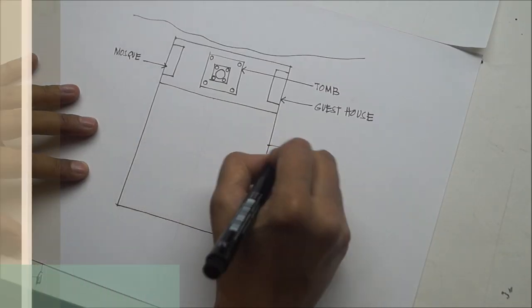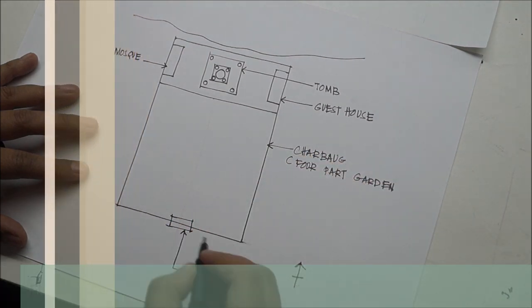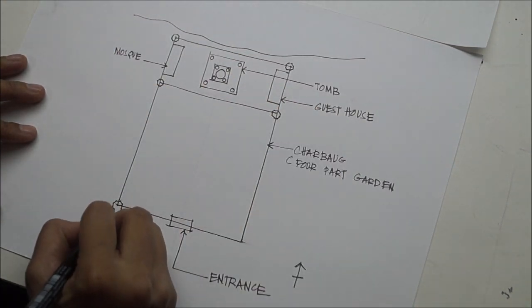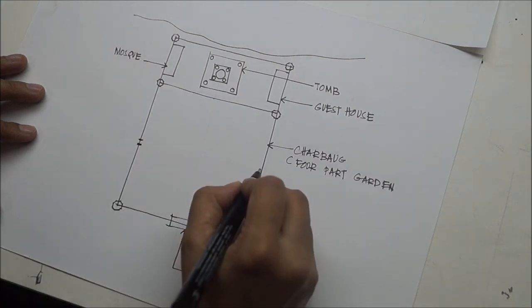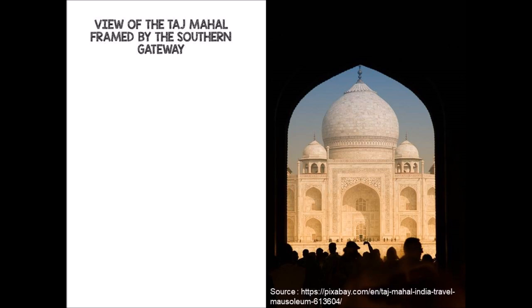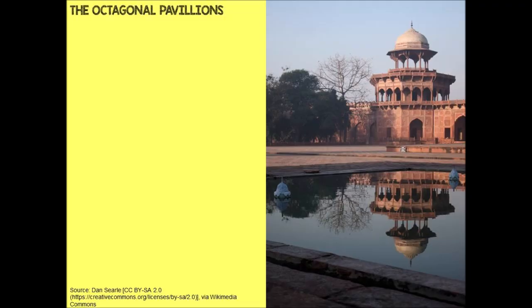The Taj Mahal complex is enclosed by a high crenellated sandstone wall, with the side along river Yamuna left unwalled. This boundary wall has octagonal pavilions at each corner. As soon as you enter through the entrance gateway, which frames the Taj Mahal, you are transported to an altogether different world. The entrance gateway frames the Taj and acts as a transition from the outside world into the Taj complex. The monumental entrance gateway facing south is along the axial axis, making the plan symmetric along this axis. It consists of 22 small domes and is clad with red sandstone and marble.